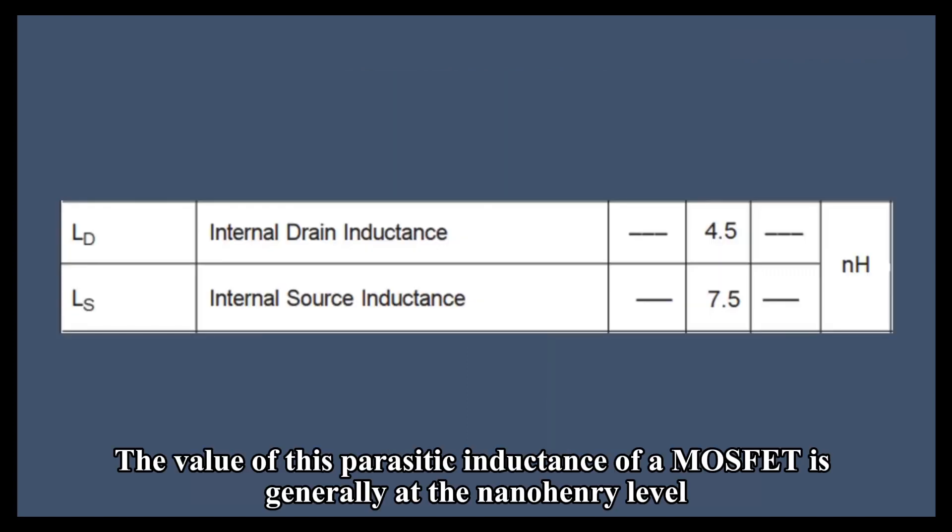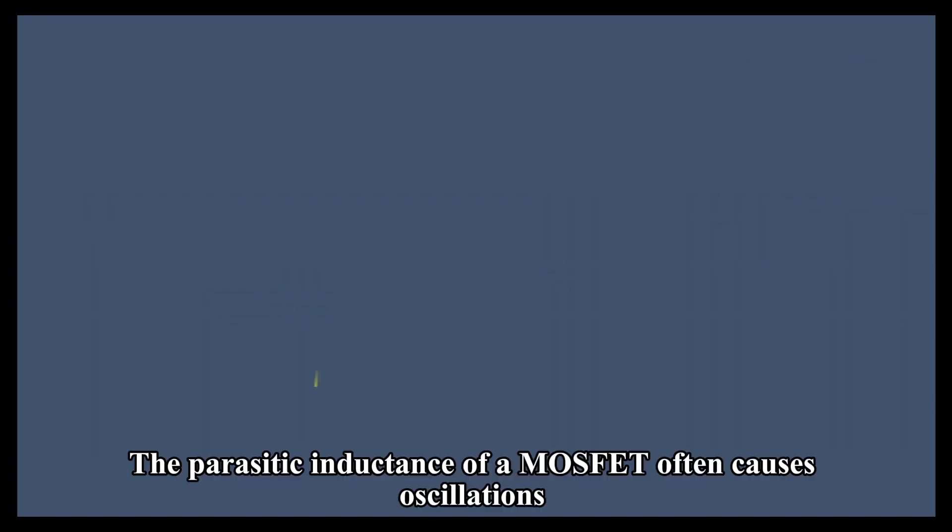The value of this parasitic inductance of a MOSFET is generally at the nanohenry level. The parasitic inductance of a MOSFET often causes oscillations and spike voltages in some MOSFET switching circuits, which can lead to some EMI problems. Circuit design should pay attention to this.